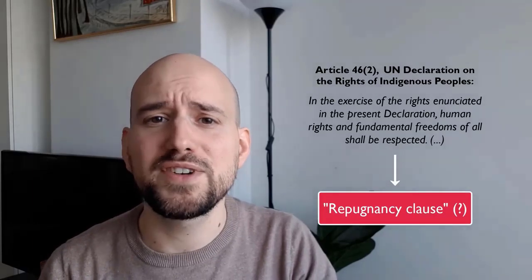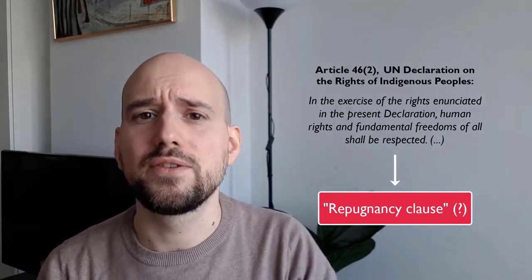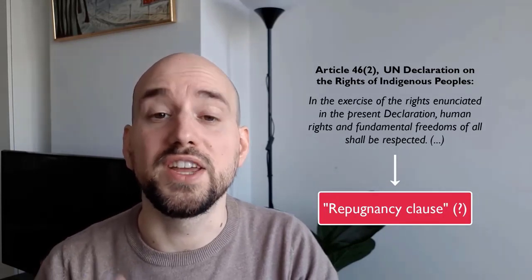The second criticism relates to Article 46, Paragraph 2, in which it is stated that in the exercise of the rights enunciated in the present declaration, human rights and fundamental freedoms of all shall be respected. Now, this might seem harmless, but there have been authors who have claimed that this is in fact a so-called repugnancy clause — in the sense that if the practices of indigenous peoples or the way they govern themselves is not appropriate to an essentially Western human rights framework, then we do come to prefer the individualist human rights framework. It's interesting to note which four countries voted against the UN Declaration in the General Assembly: the United States, Canada, New Zealand, and Australia.